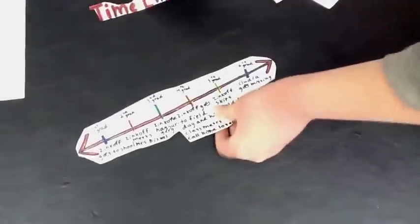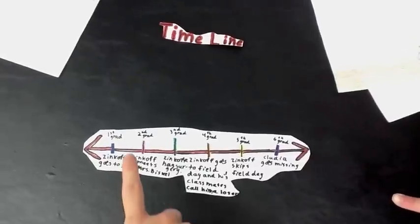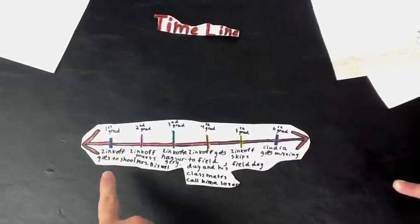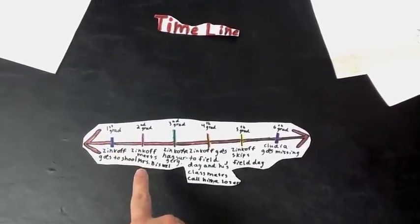This is a timeline of the grades Zinkoff goes through in the book. In first grade, Zinkoff goes to school. In second grade, Zinkoff meets Miss Biswa.